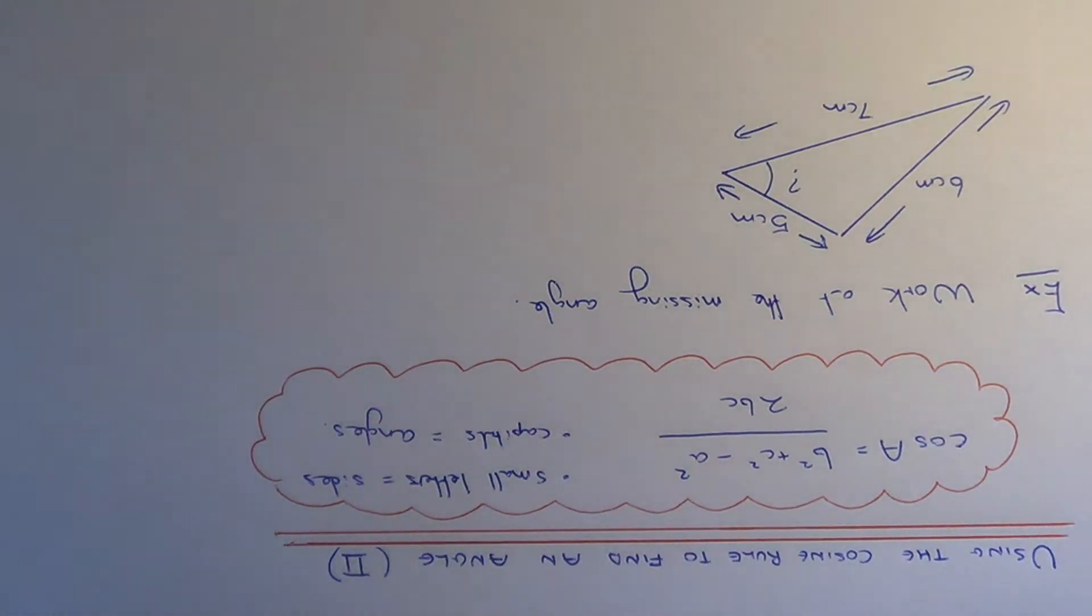Hi, today I'm going to show you how to use the cosine rule to work out the missing angle in a non-right angle triangle.